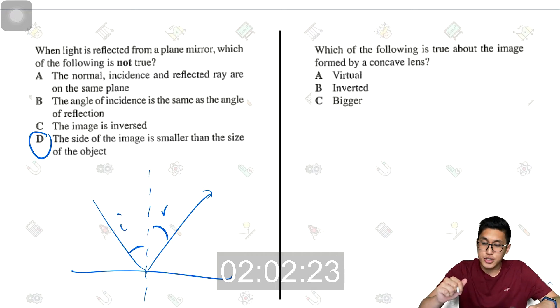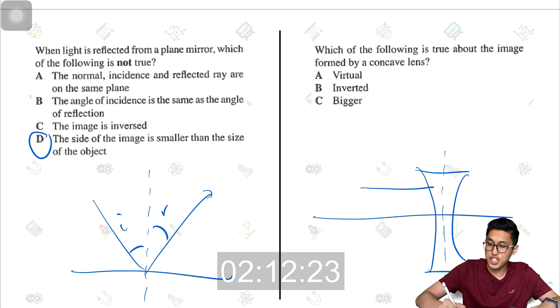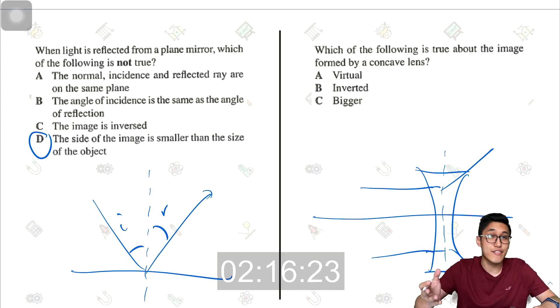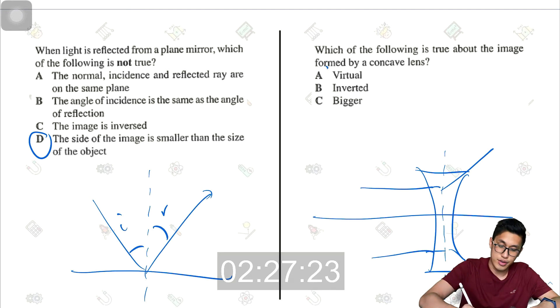Next, which of the following is true about the image formed by a concave lens? So concave lens looks like this. And we all know that a concave lens is actually a diverging kind of lens. So anything that is diverging, whether it's a concave lens or it's a convex mirror, they always give the same image characteristics, which is DUV, diminished, upright and virtual. So here, virtual would be correct.